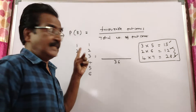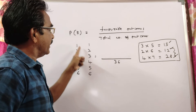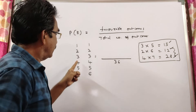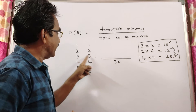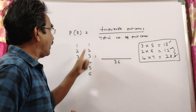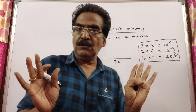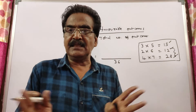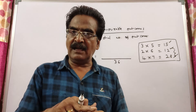The pairs where both numbers are odd are: one-one, one-three, one-five, three-one, three-three, three-five, five-one, five-three, five-five. So these nine pairs give an odd product.